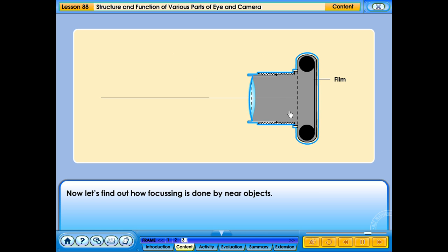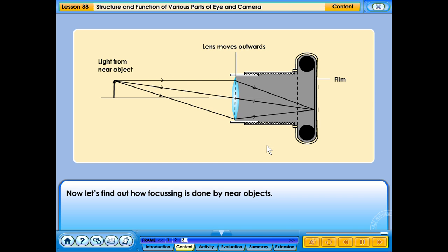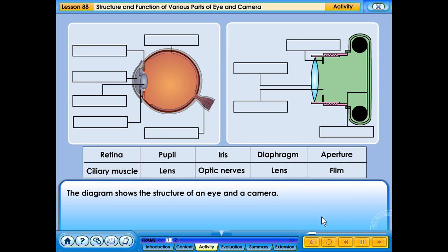Now, let's find out how focusing is done by near objects. Drag and drop the appropriate labels into the empty box and click the check button to check your answer.